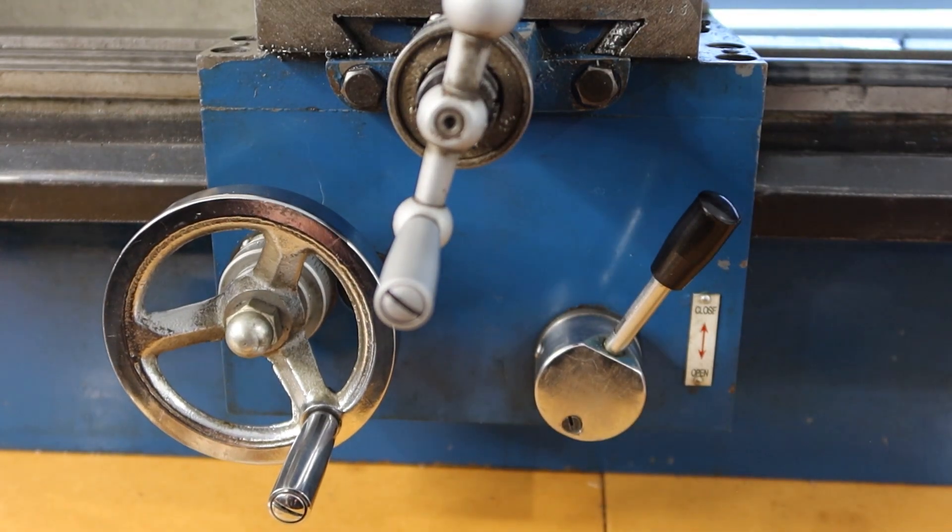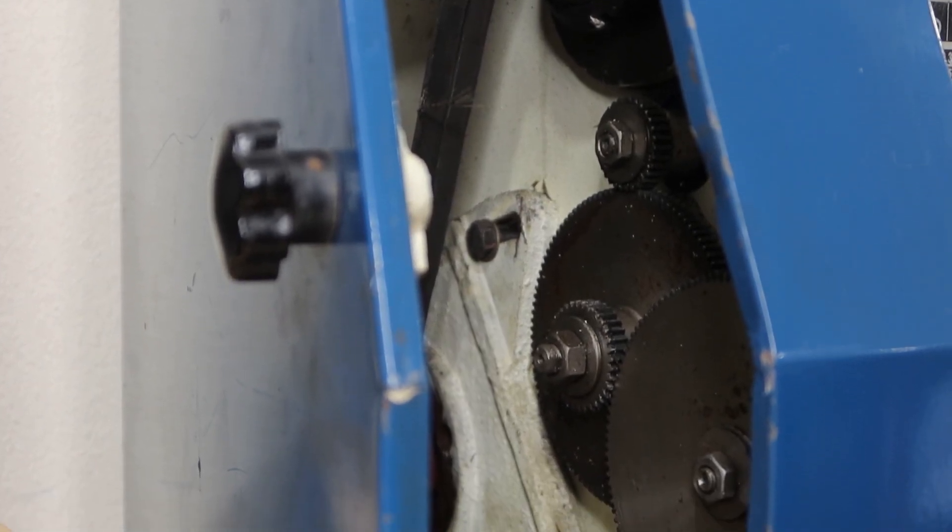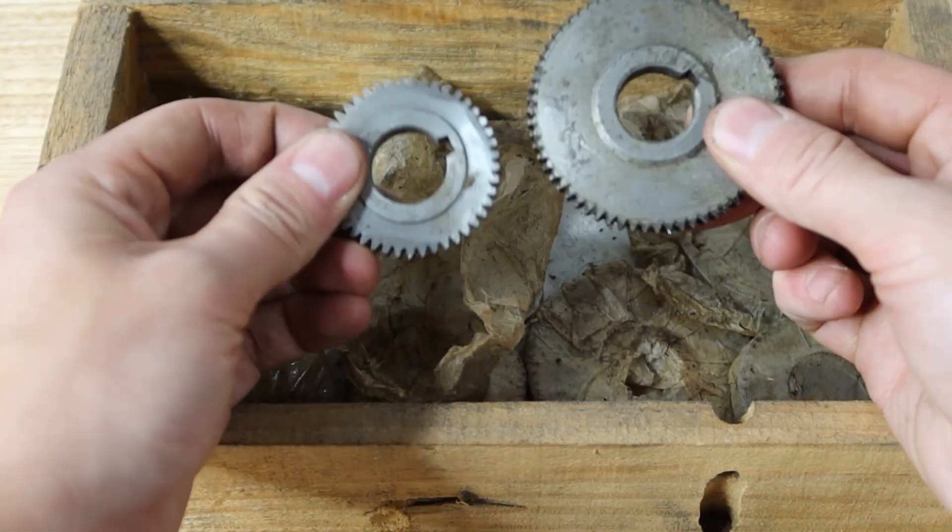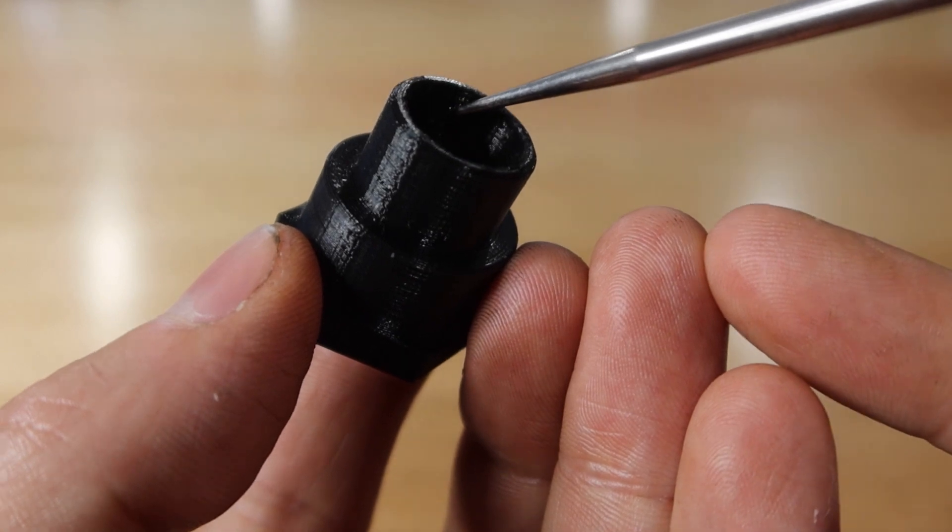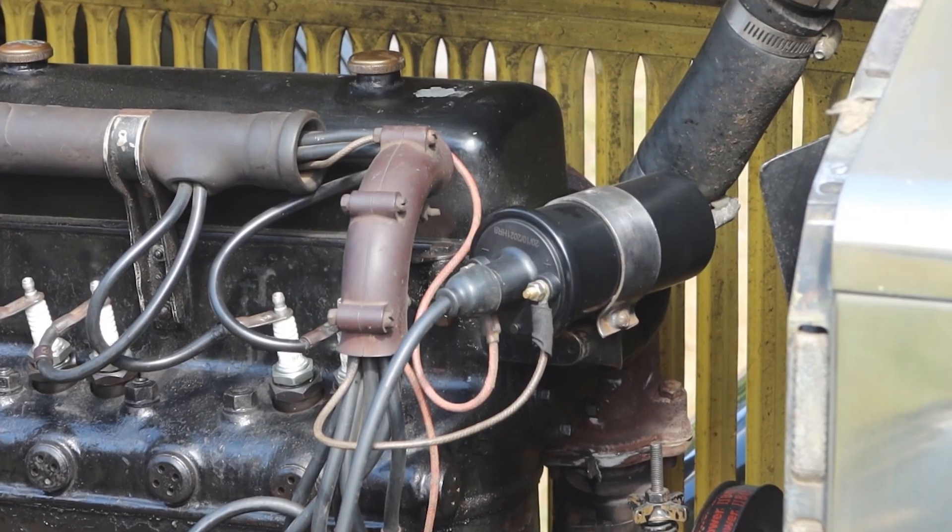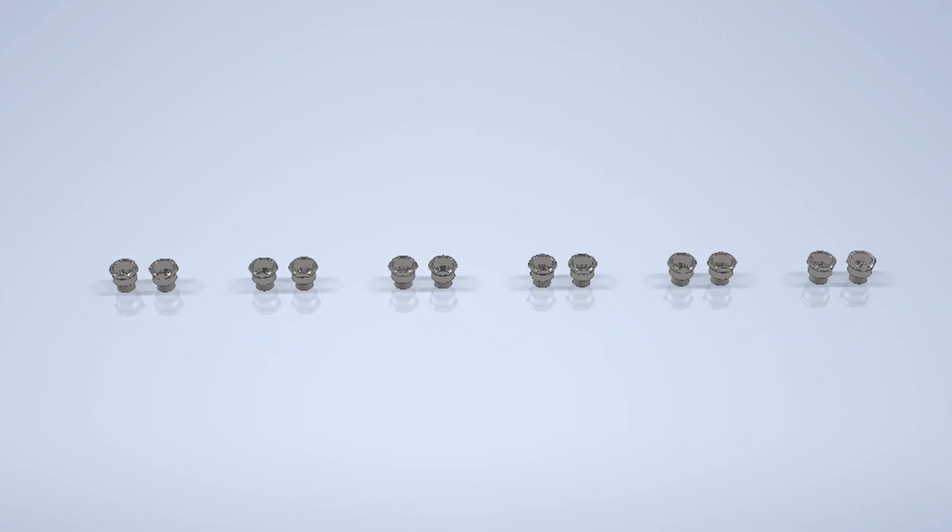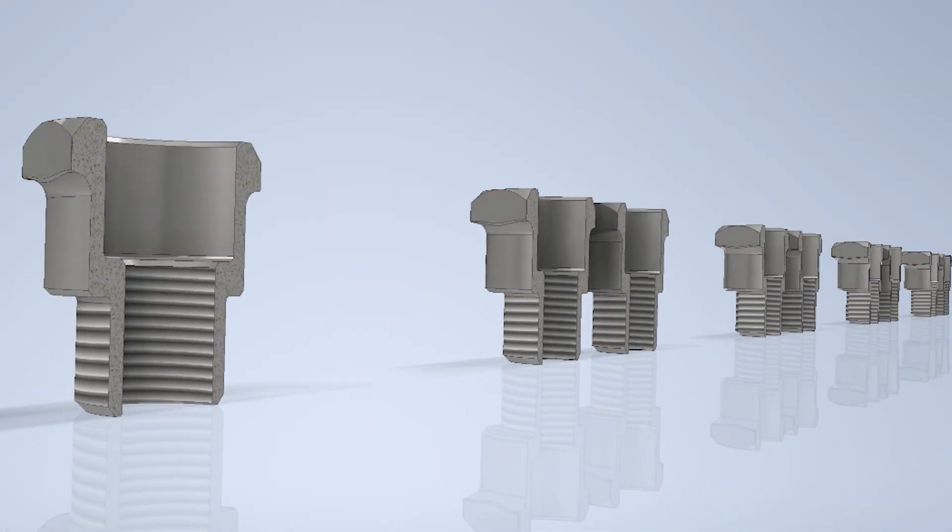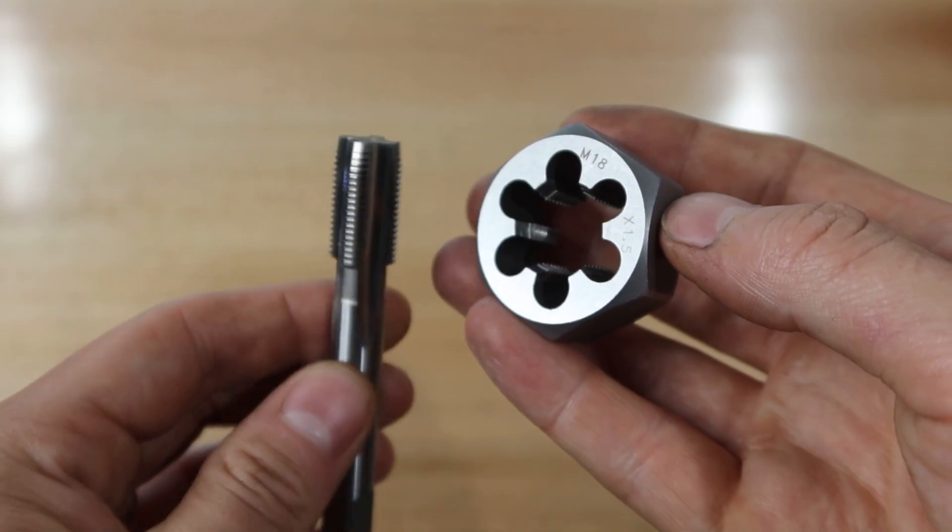Whilst this lathe does have the ability to single point cut a thread, it would be a saga to determine the gear ratio I need with this chart and my box of unlabeled gears. I'd need to cut the M18 external thread as well as the M14 internal thread. This car has both a coil and a magneto - that's 2 plugs per cylinder, 6 cylinders, so 12 adapters are needed. I don't really fancy single point cutting 24 threads.